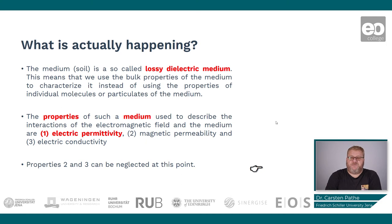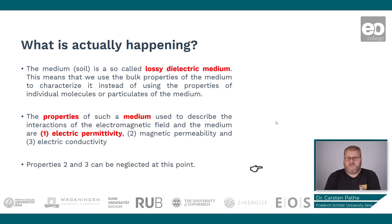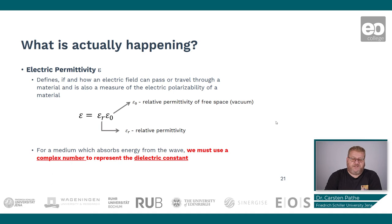The properties of such a medium used to describe the interactions of the electromagnetic field and the medium are: first, the electric permittivity; second, the magnetic permeability; and third, the electric conductivity. For our purposes, we can neglect properties two and three — the magnetic permeability and the conductivity — and we only have a look at the electric permittivity.